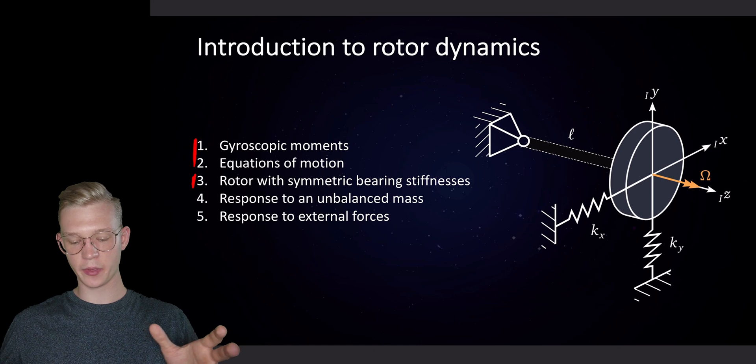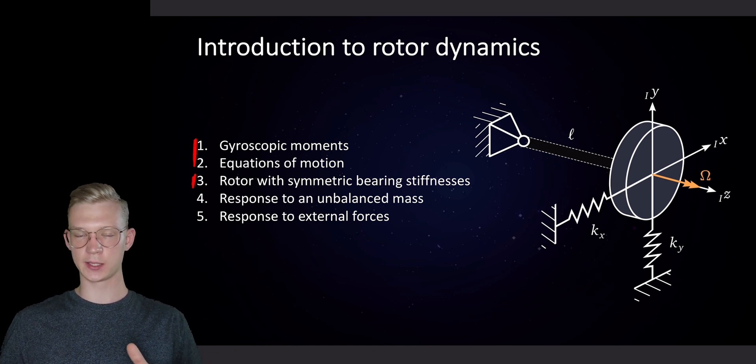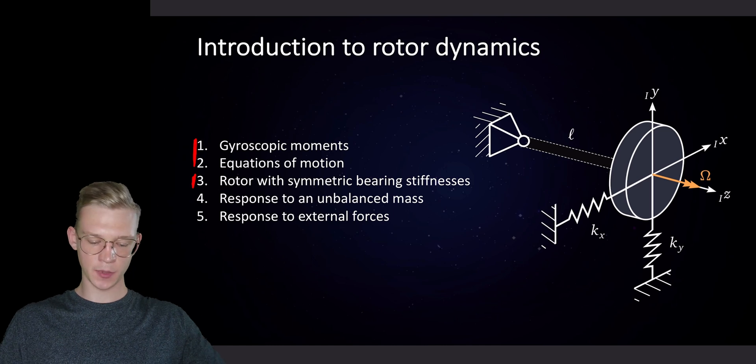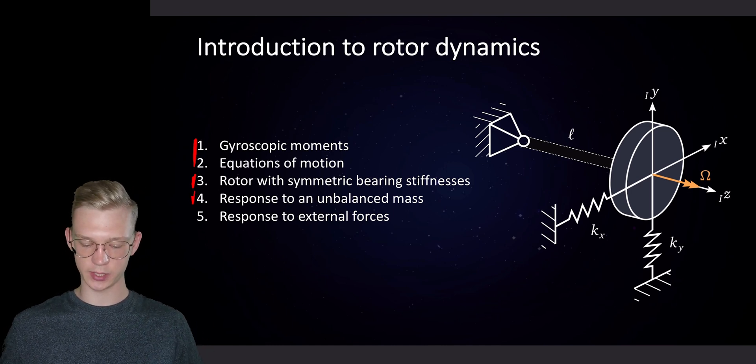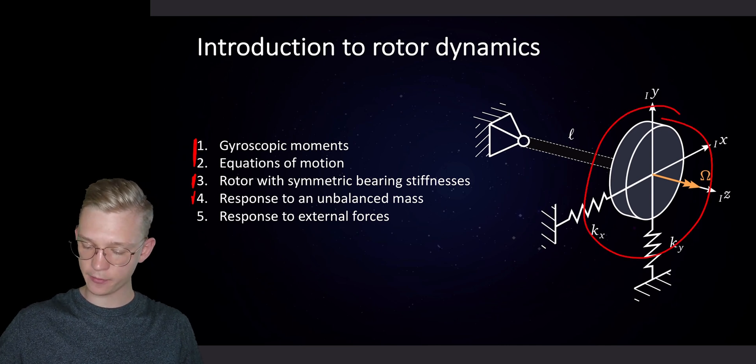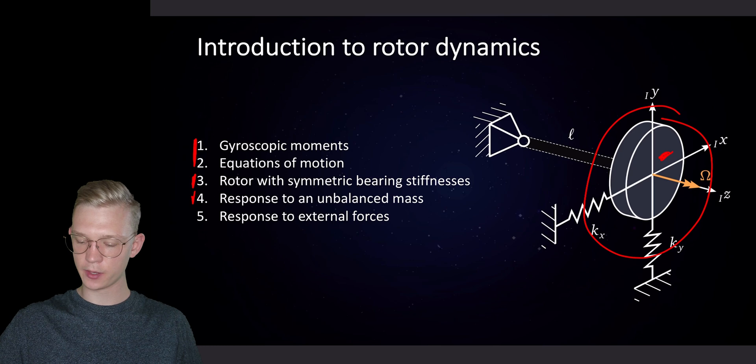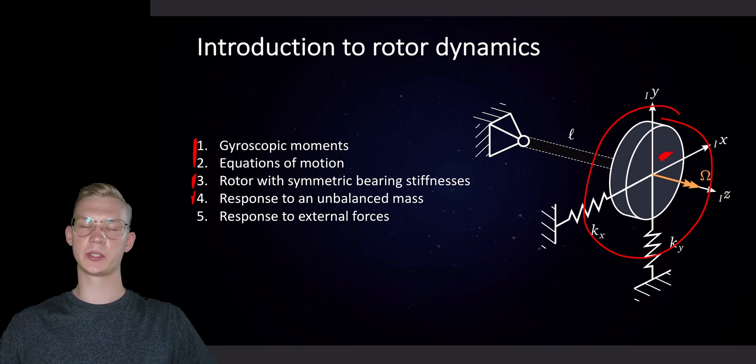Then we talked about a rotor with symmetric bearing stiffnesses and about the eigenfrequencies of that system and the eigenvectors. In this video we will be talking about the response of our system to an unbalanced mass. So if we have this system where we have the center of mass not on the rotation axis, how will our system behave?